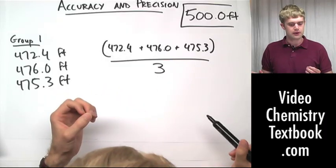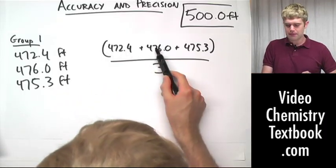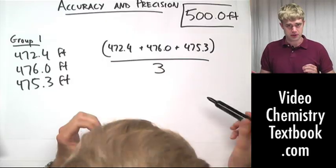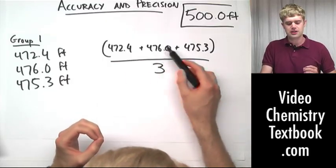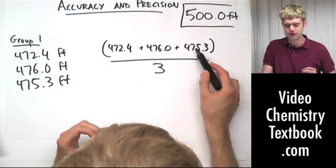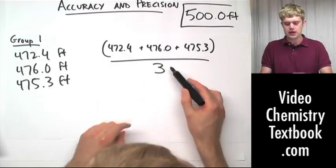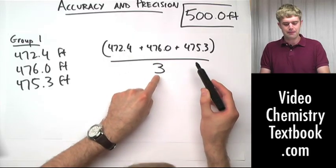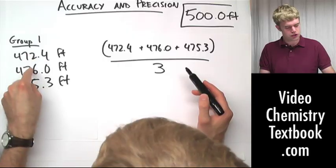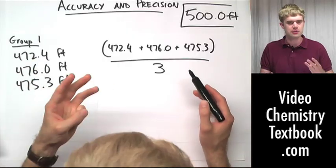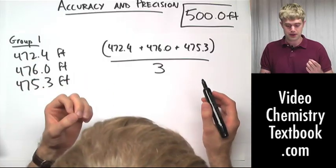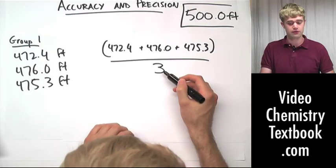What about significant figures here? Well, these three numbers are all measurements, so we need to worry about significant figures for them. There are four significant figures in each of these numbers. The three is a number that we got by counting—one, two, three—the number of measurements that the groups took. So we don't have to worry about significant figures for this.